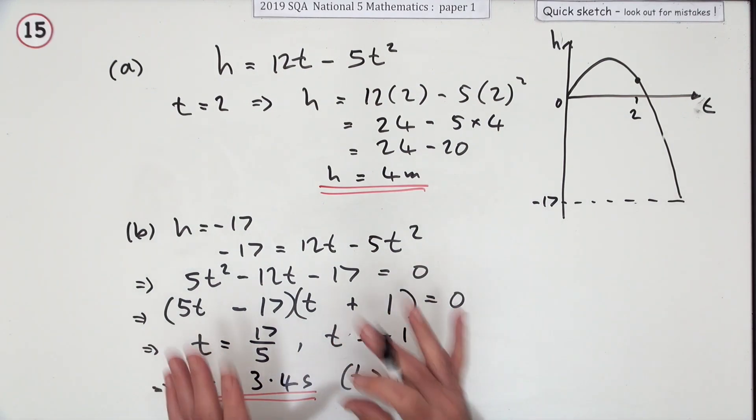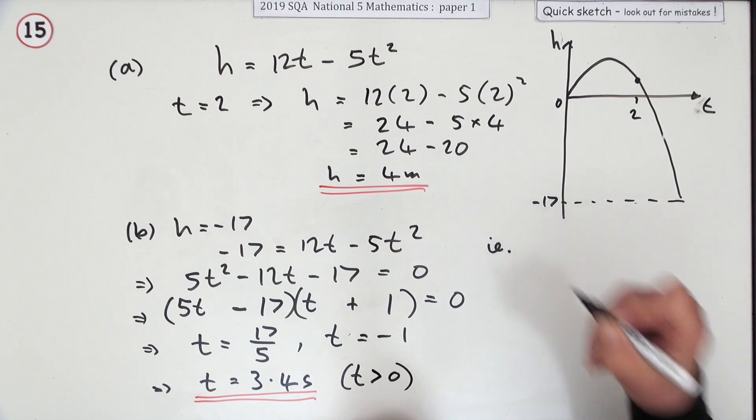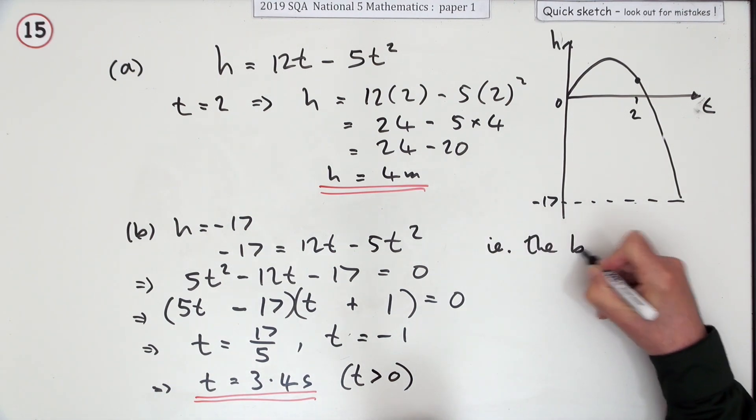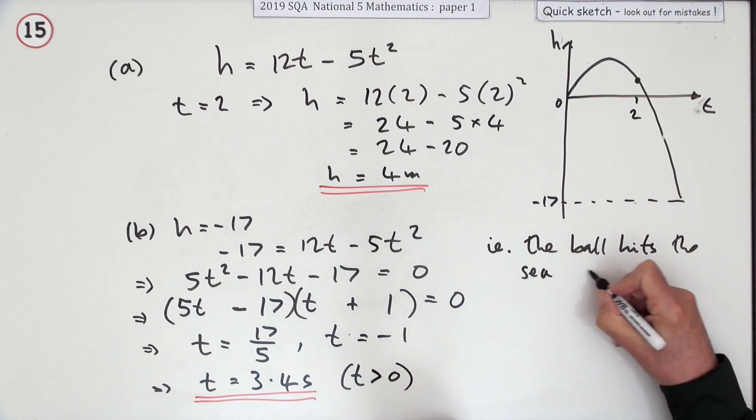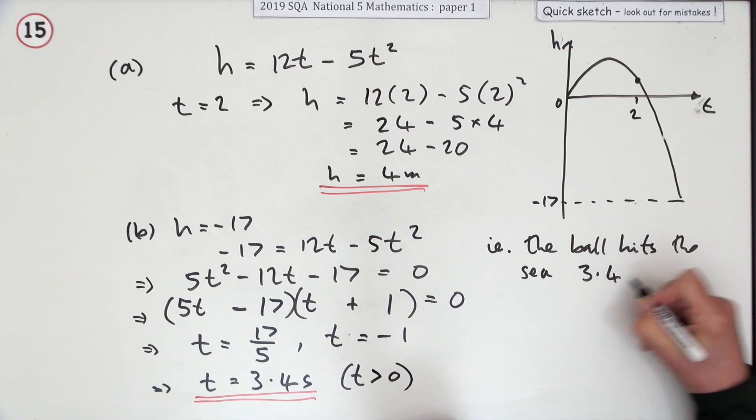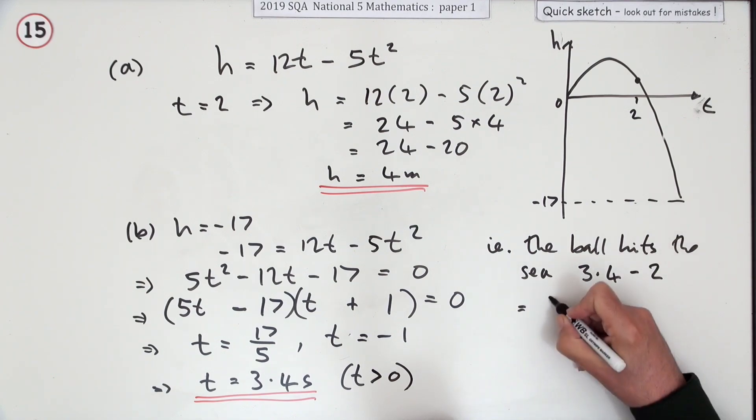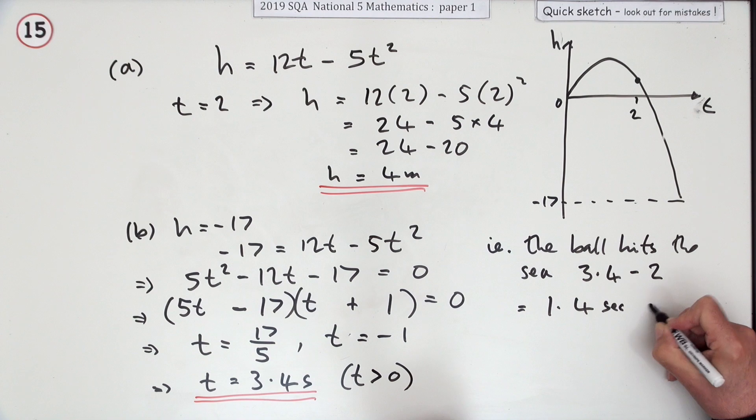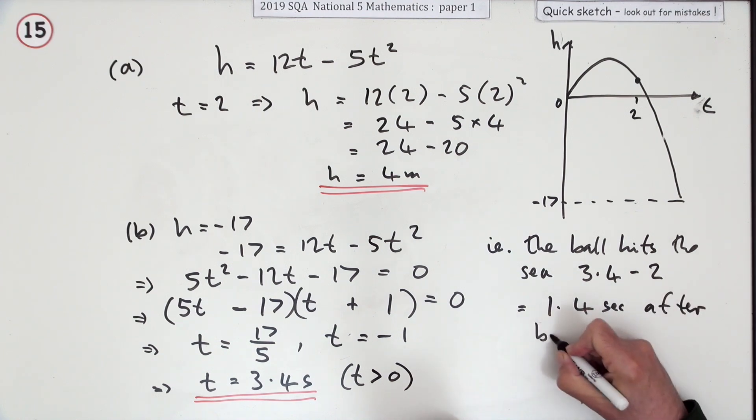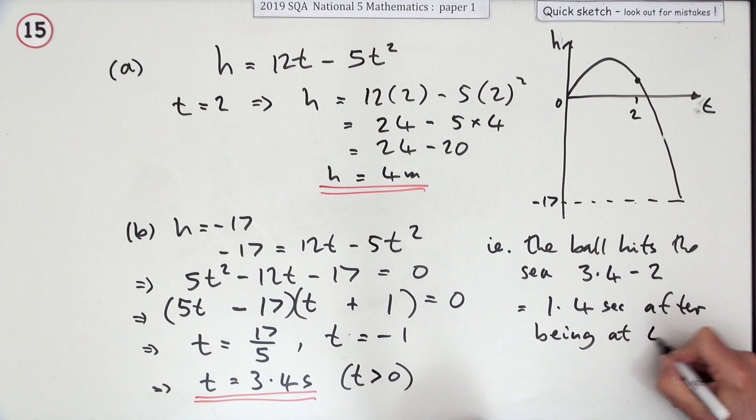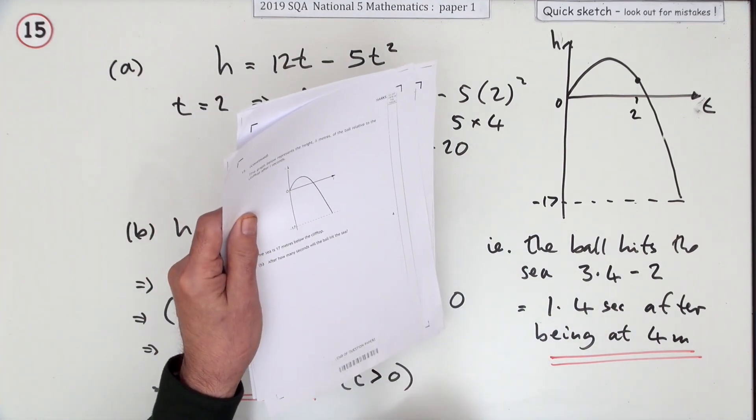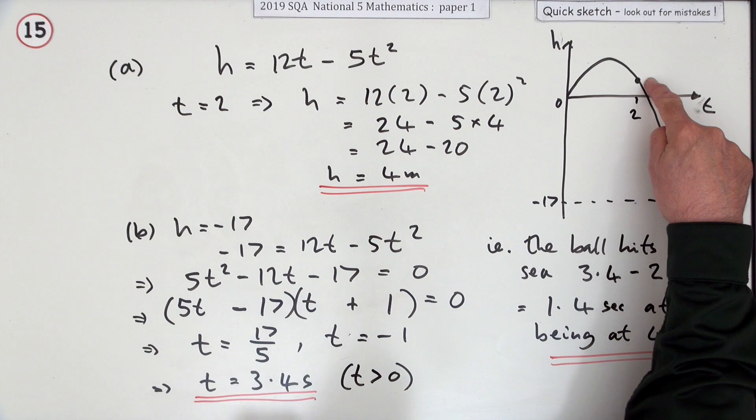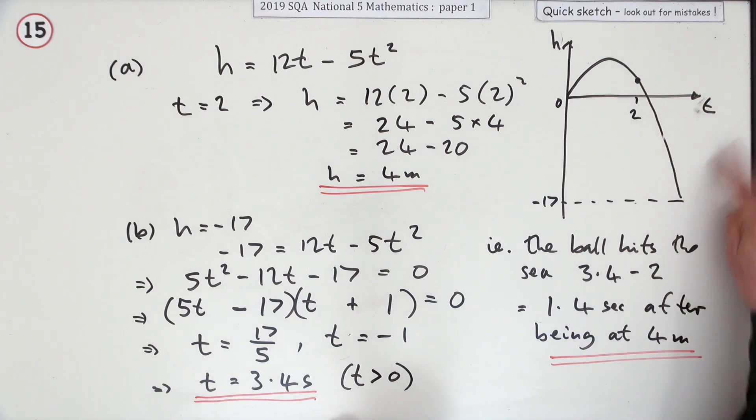Now if that's the answer then it would get marked there. However, I'm going to say, i.e. the ball hits the sea 3.4 minus 2, which equals 1.4 seconds after being at 4 meters, just in case that is the interpretation when it said after how many seconds will it hit the sea. It took two seconds to get to here and then another 1.4 seconds to hit the sea.